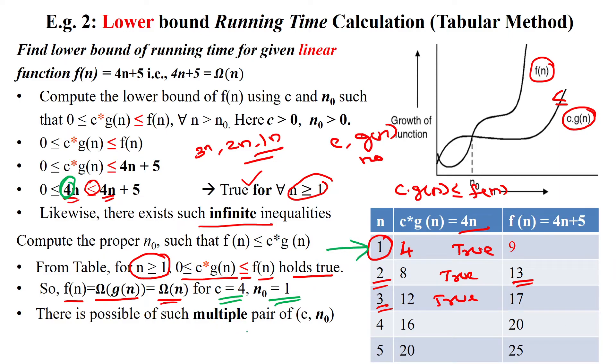So constant value c equals 4 and n₀ equals 1. Like that, we can get multiple such pairs by using different smaller functions for substituting c times g(n). Thanks for watching.